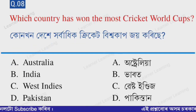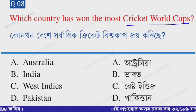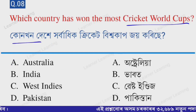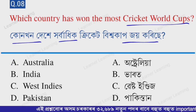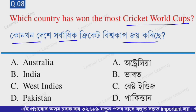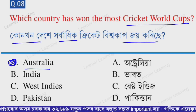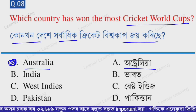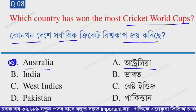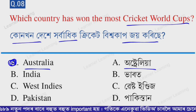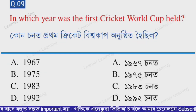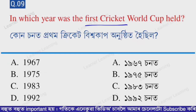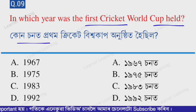Next question: which country has won the most Cricket World Cups? The correct option is option A — Australia. Australia has won the most Cricket World Cups.